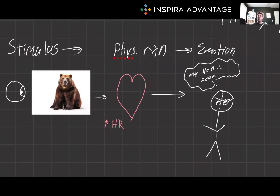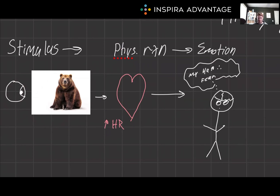The James-Lange theory suggests that emotions are the result of physiological responses to external stimuli. According to this theory, when we encounter a stimulus, it triggers a physiological reaction, which our brain then interprets as a specific emotion. For instance, if you see a bear in the woods, your heart will start racing and you might begin to shake and tremble. According to the James-Lange theory, you interpret these physiological changes as fear.